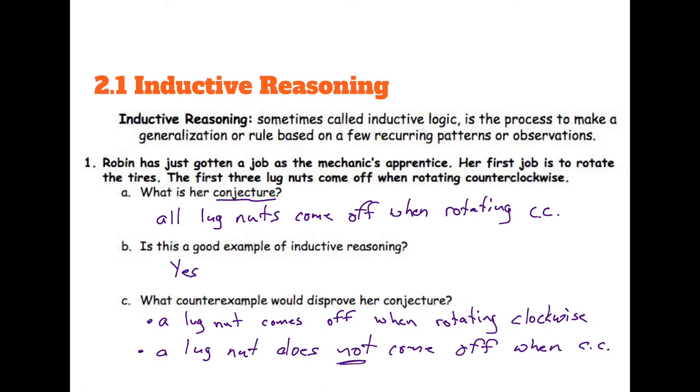So both of those would disprove her conjecture and say that okay, so yes, you definitely observed that, came to that conclusion. But just because it happened to those three, it's not going to happen to all of them. So that's an invalid conjecture that she made.